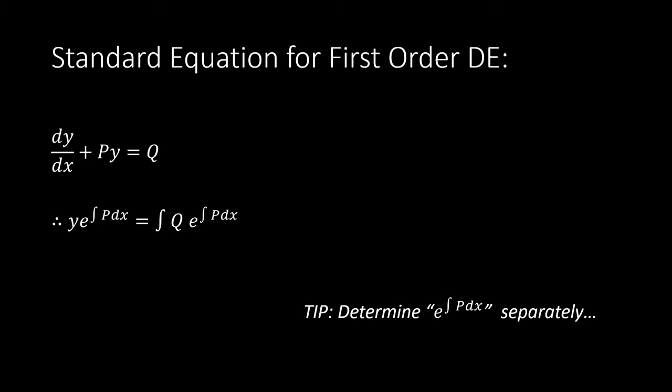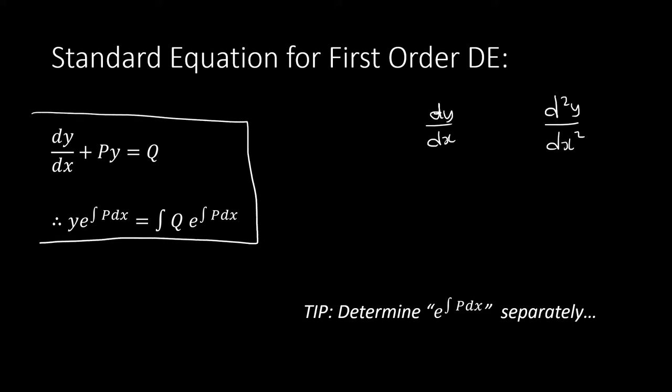Your first order is the one where you have only dy/dx, because it's differentiated to the first level. The second order has the second derivative. If you check your two questions on question four, you have one for only dy/dx and the other for the second derivative. On the last page of your formula sheet for Maths N6, you have the last five formulas, and one of those equations is what you're going to use for the first order differential equation.